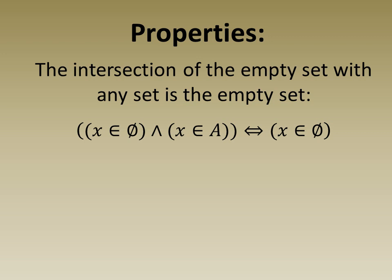Next, the intersection of the empty set with any set is the empty set. In a similar manner we fill out the truth table and declare the proposition as true if the bi-implication is tautologically true.